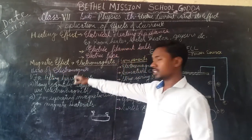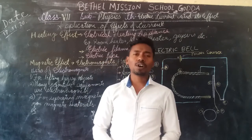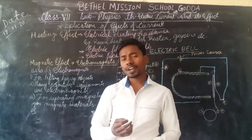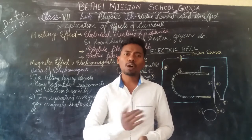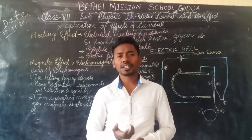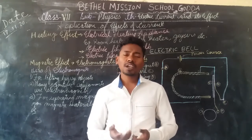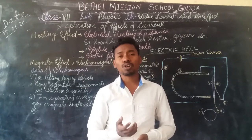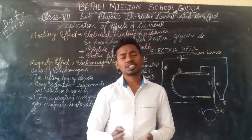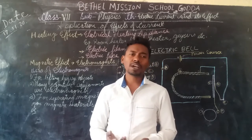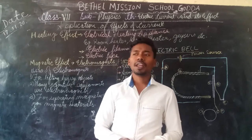Now the second application is the magnetic effect of electric current. When current flows, it has a tendency to produce some magnetism — a magnetic field around itself. By observing this property, we have developed a device called an electromagnet. A magnet which can be activated when electricity is passed through it is called an electromagnet — it is made by passing electricity through an object.